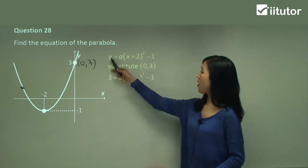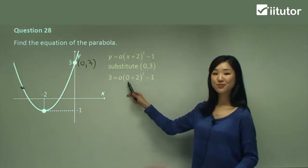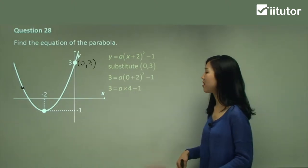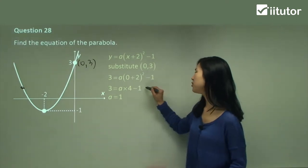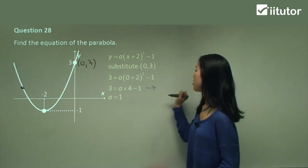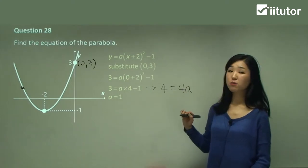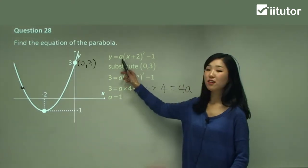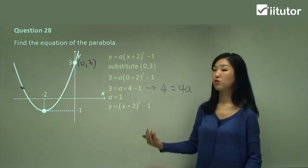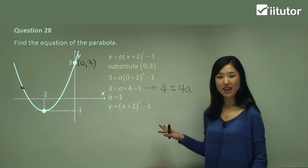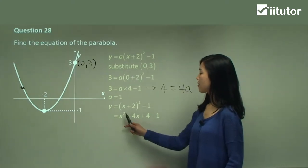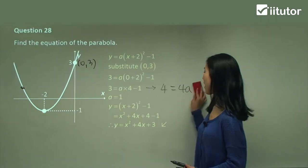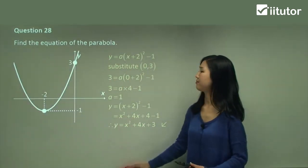So I'll substitute that point in. y is going to be 3 and x is going to be 0. So 0 plus 2 squared is 2 squared, which is 4. So I have a times 4. Simplifying: 3 equals 4a minus 1. Move negative 1 over, so it becomes 4 equals 4a. So a equals 4 divided by 4, which is 1. Substitute a back in — a is 1. So y equals 1 times x plus 2 squared minus 1. Expanding: x squared plus 4x plus 4, then subtract 1. So the final answer is x squared plus 4x plus 3 — the constant becomes 3. That's question 28, applying the same method as question 27.